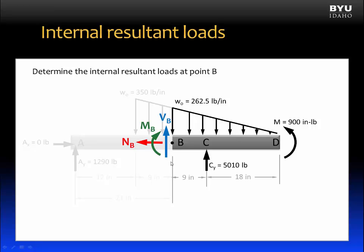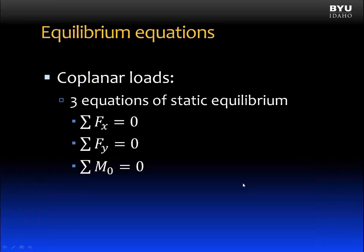acting parallel to that cut. And there is an internal moment acting about point B, M sub B. These are our three internal resultant loads. We can solve for their magnitude and direction using the same three equations of static equilibrium that we used to get the reactions.